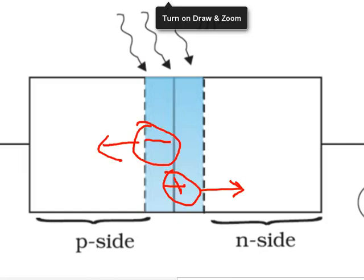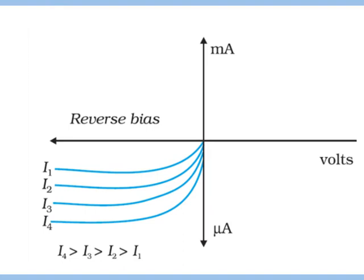Electrons moving this side, holes moving this side. Let's look at the graphs. This is the VI graph and this is being made in the fourth quadrant because the current is opposite. Why? Because the biasing was opposite.